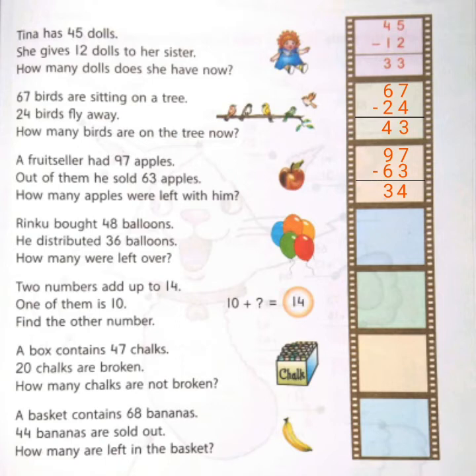Let's do one more problem. Ringu bought 48 balloons. He distributed 36 balloons. How many were left over? How many were left over indicates that we have to do subtraction.